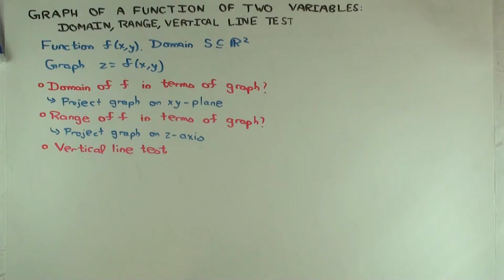Now, what about the vertical line test? The vertical line test for a function of one variable just said every line parallel to the y-axis intersects the graph at at most one point and it intersects the graph if and only if that corresponds to something in the domain. Right?